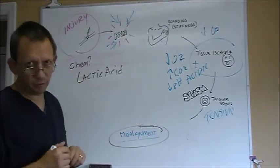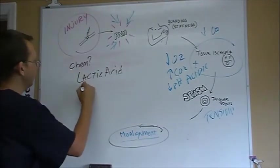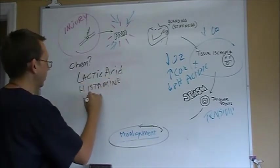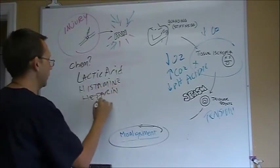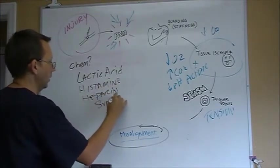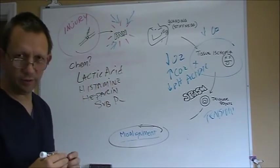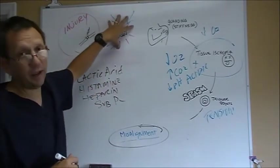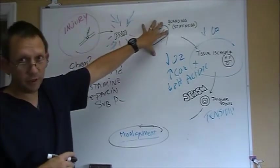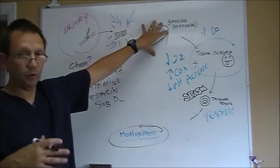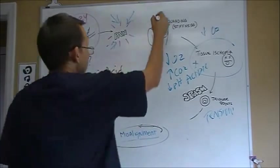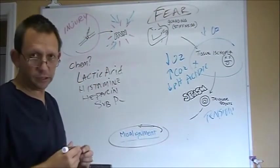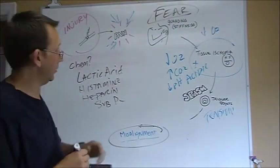But there's a whole bunch of other chemical things that can happen. We have histamines, and heparines, and all kinds of stuff. Substance P, and some other chemicals that are related to pain and injury. Now that comes back right into here and gives us pain again. That comes back up into here and causes us to become guarding and stiff. We don't want to move. There's a fear reaction. This is all fear. Who wants to move something that hurts? You think you're going to hurt it again.